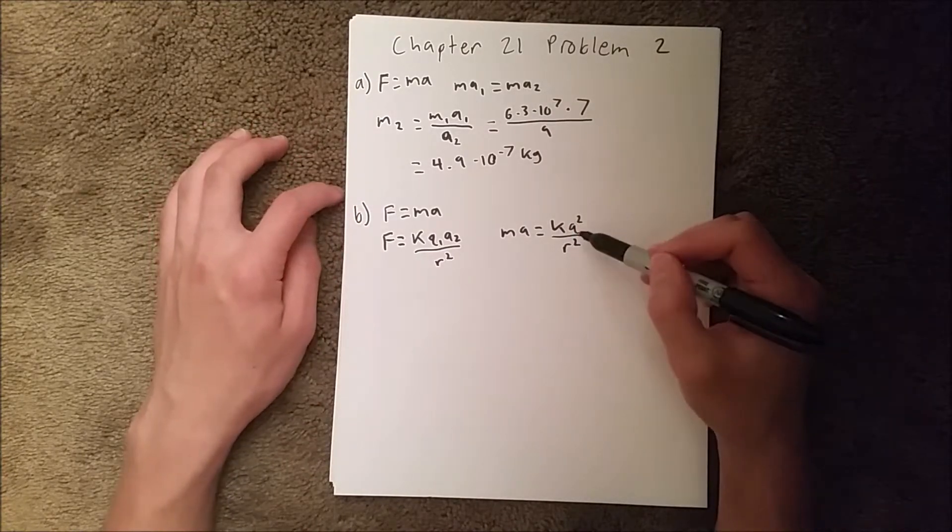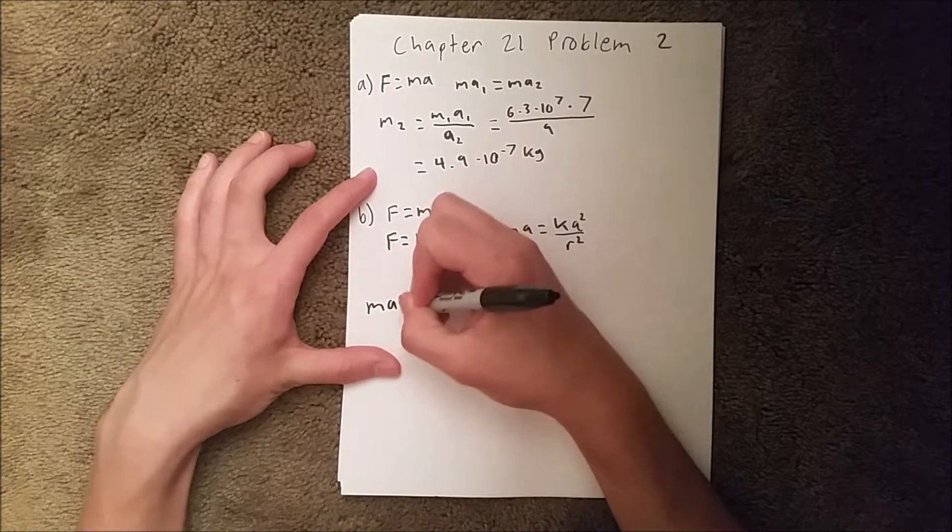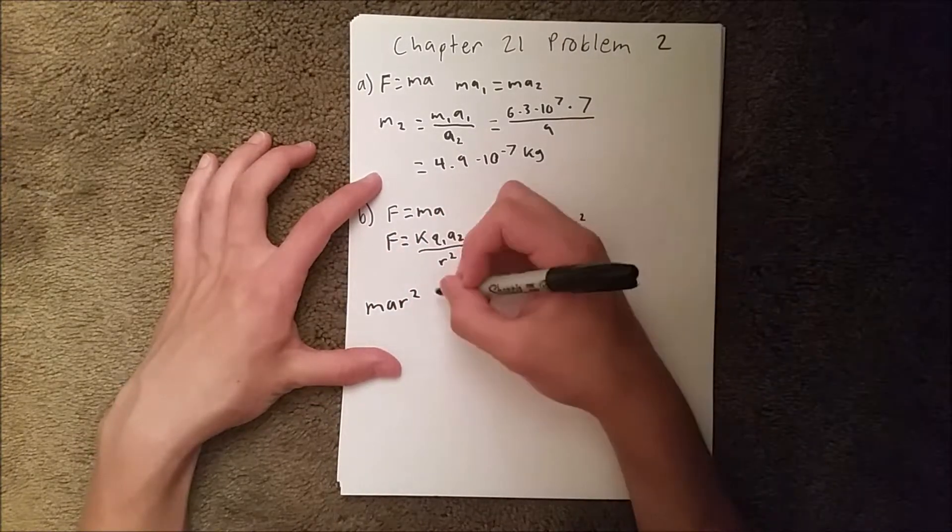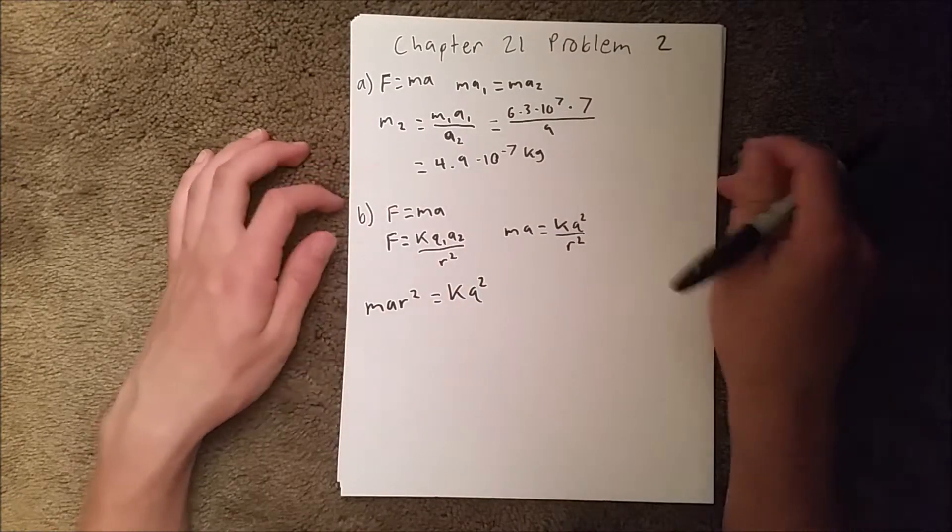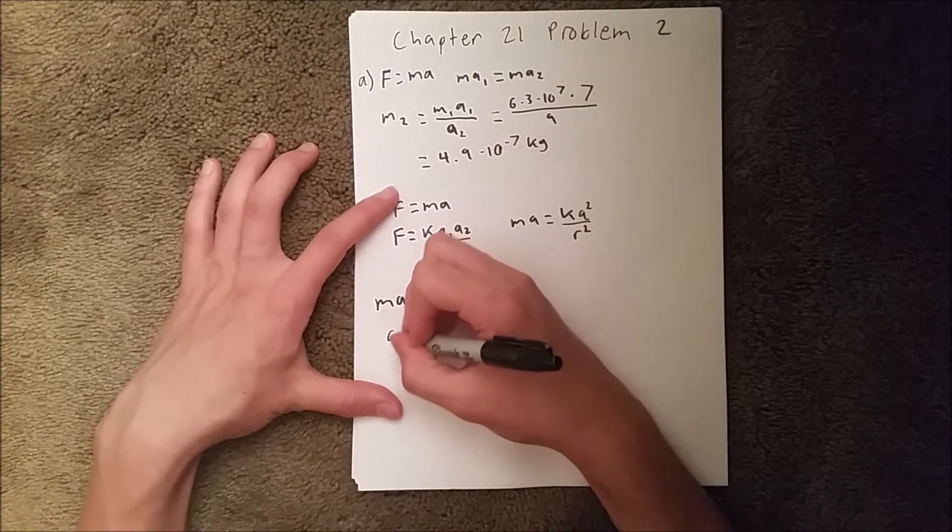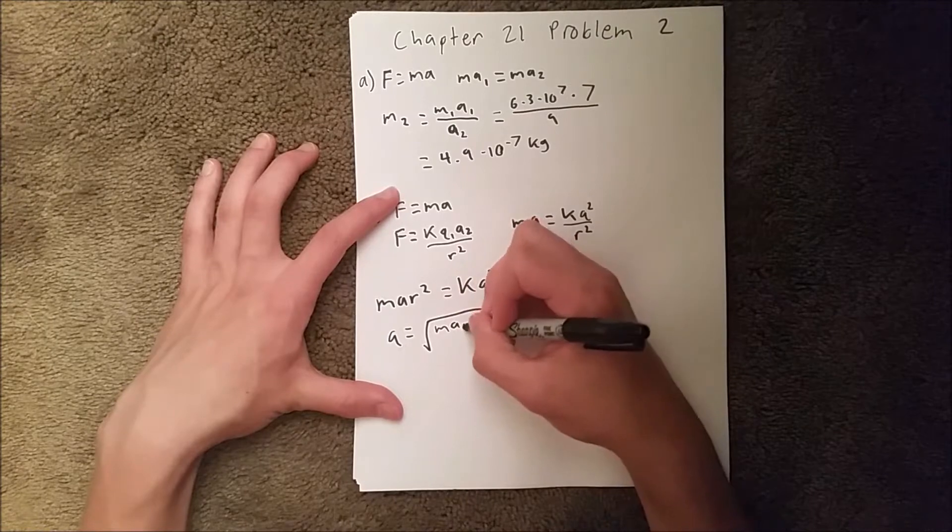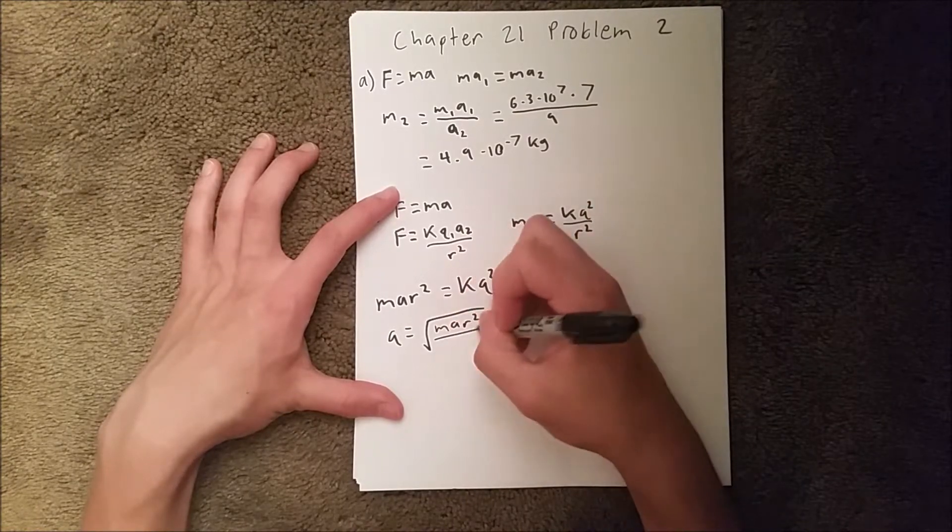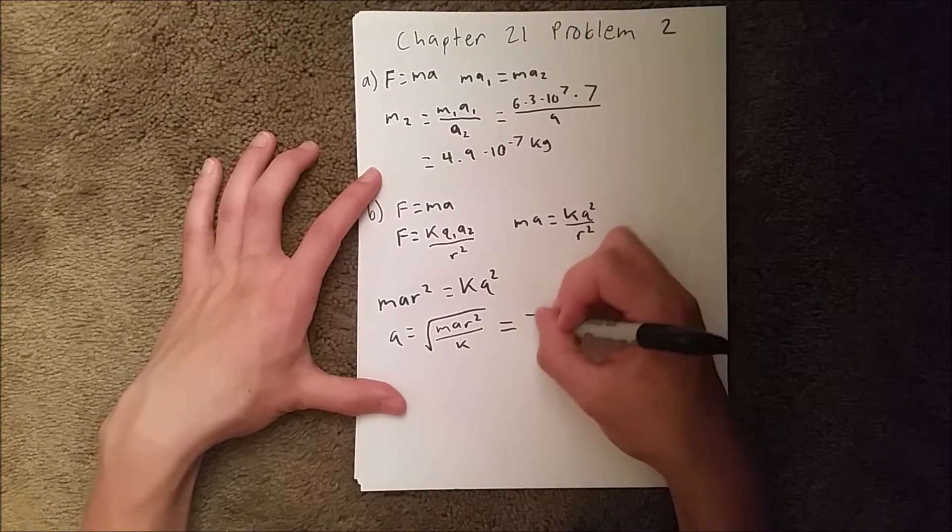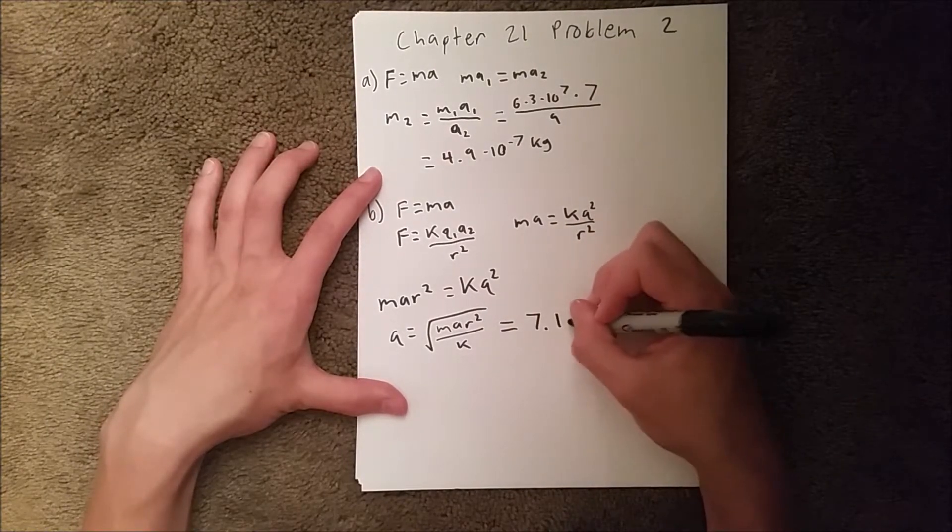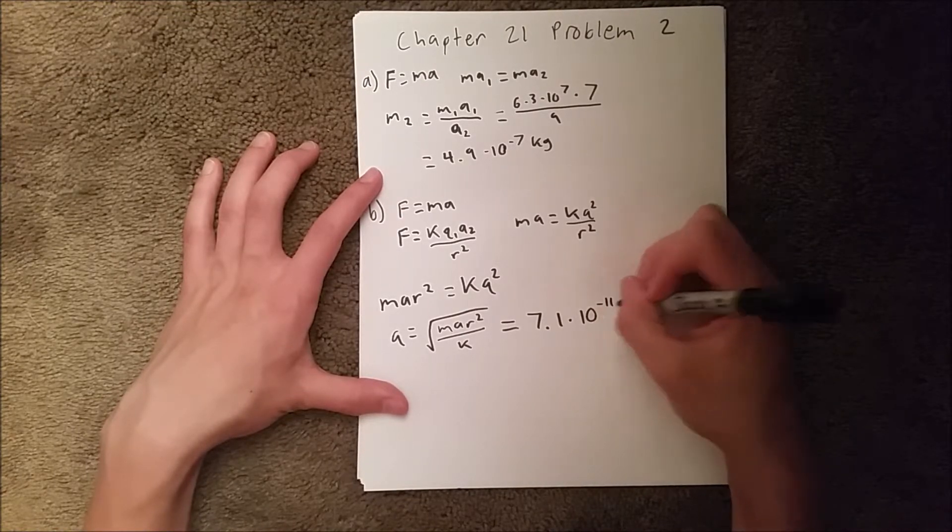We can rearrange this equation to solve for q. Multiply both sides by r squared to get mar squared equals kq squared. Then solving for q, we get the square root of mar squared over k, and when you plug that into your calculator you should get 7.1 times 10 to the negative 11 coulombs.